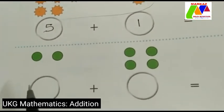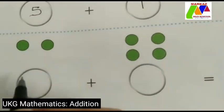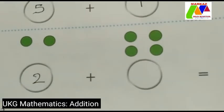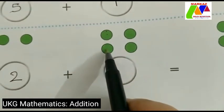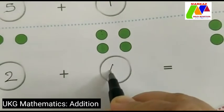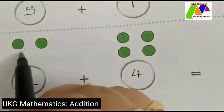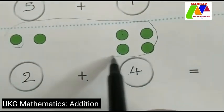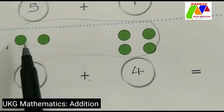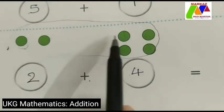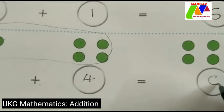Then here we can see how many circles — please count, children: one, two. So children, write two here. Then next, here we can see how many circles — one, two, three, four. Four circles. Two plus four — we add and combine together: one, two, three, four, five, six. The answer is six.